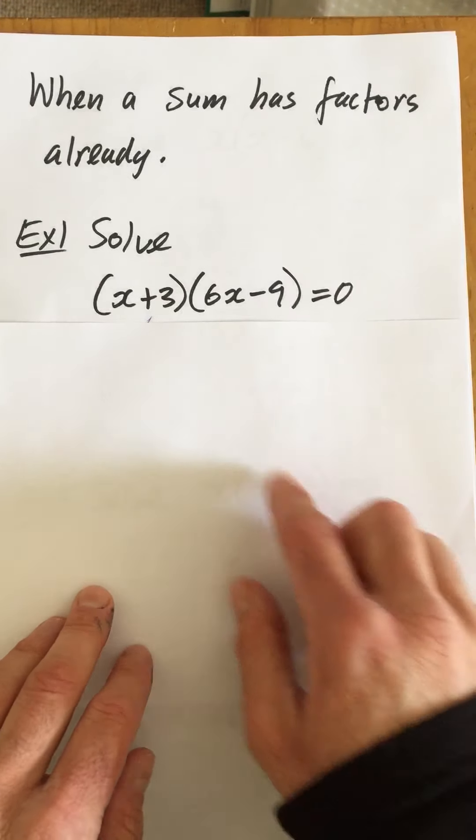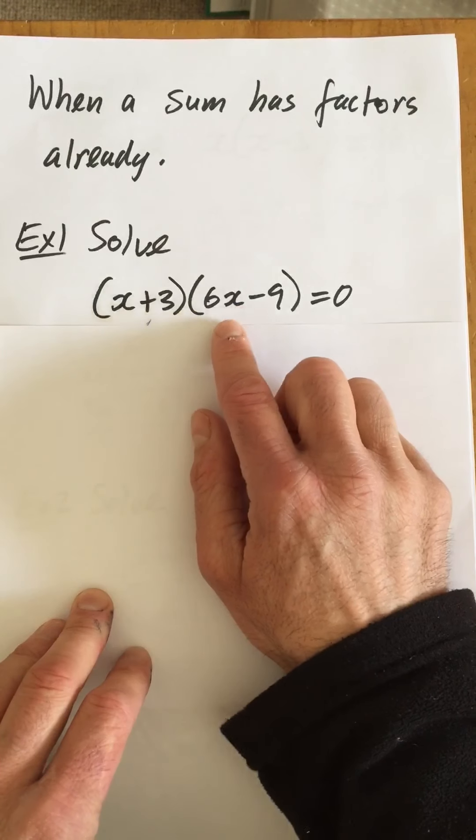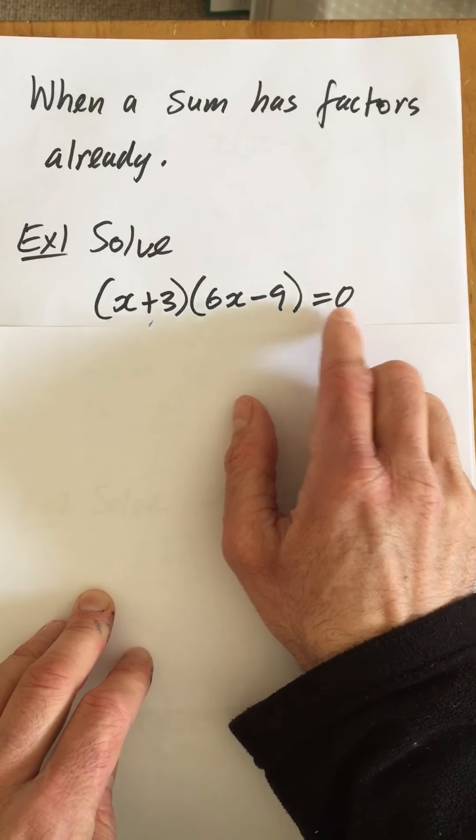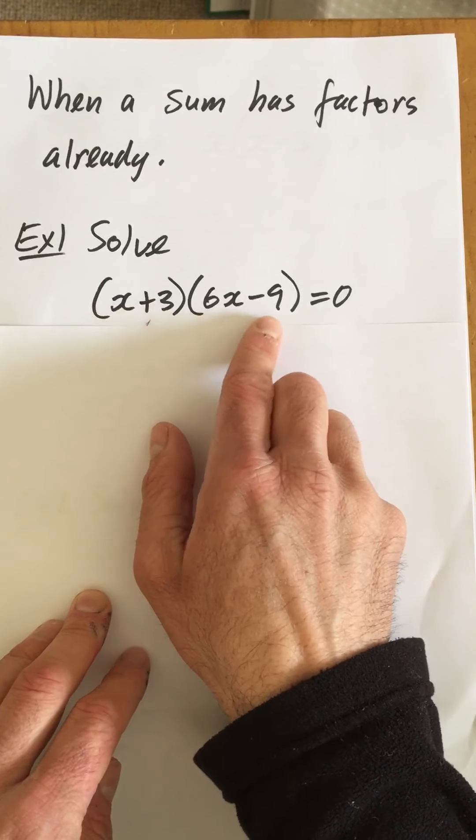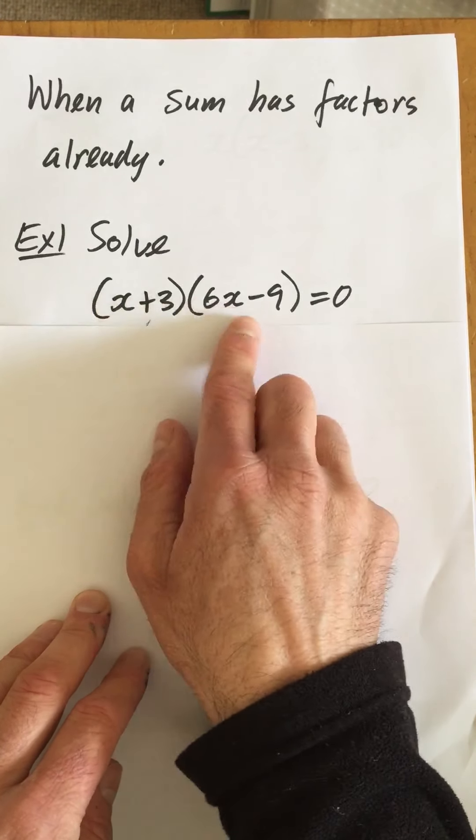Okay, so example one. Solve (x+3) multiplied by (6x-9) equals zero. You'll notice that there appears to be two factors, two brackets already.